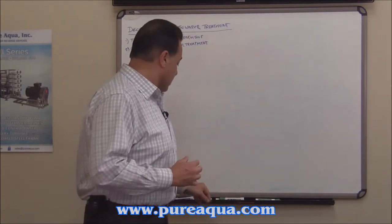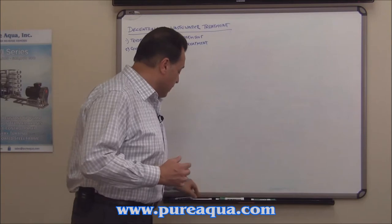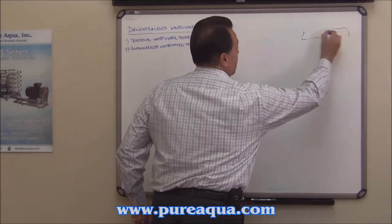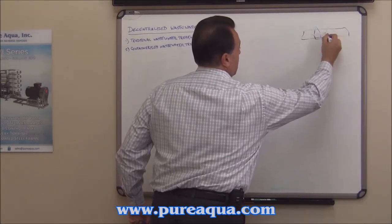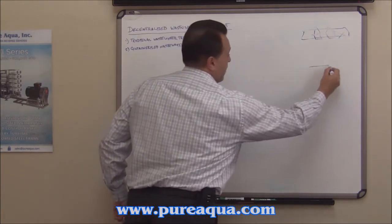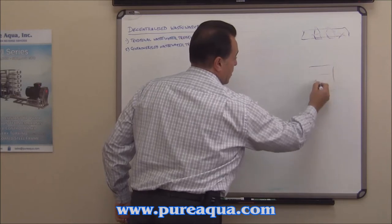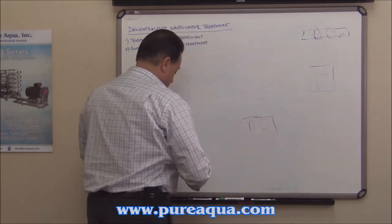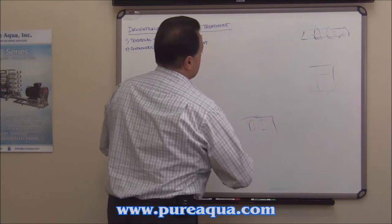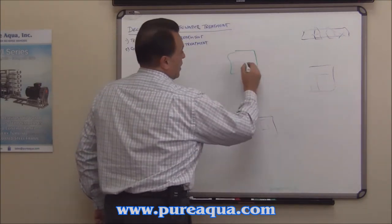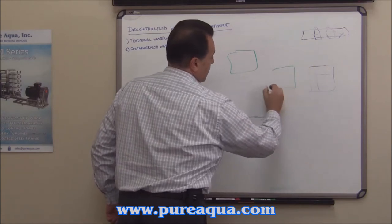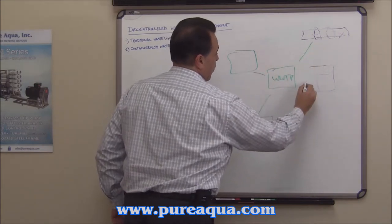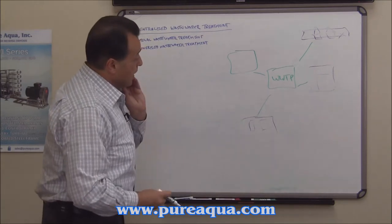Let me draw your attention to the difference between the two. If we were considering a traditional wastewater treatment plant, we'd have a housing community here, multiple units, other facilities that could be industrial, and then a power plant as an example. Having all of these — and we'll use a shopping mall as an example — connected to the wastewater treatment plant through a sewage network, all pumped to the wastewater treatment plant.